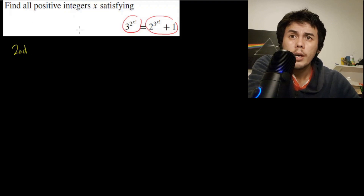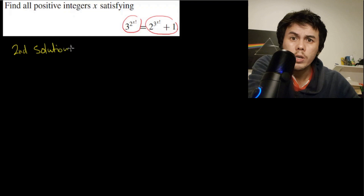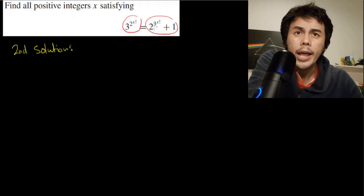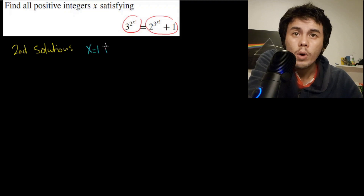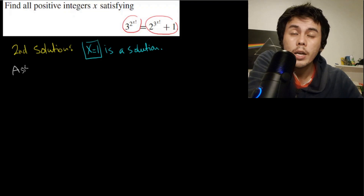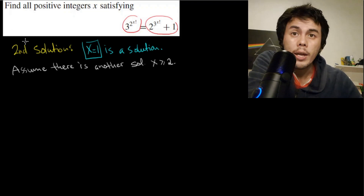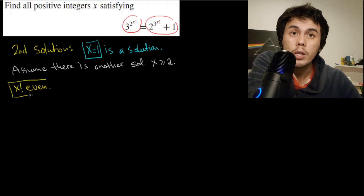Now let us try a second solution using basic number theory. We already know x = 1 is a solution. Assume there is another solution with x ≥ 2. For x ≥ 2, x! must be even.